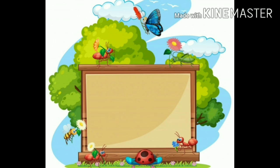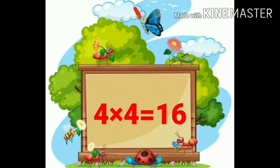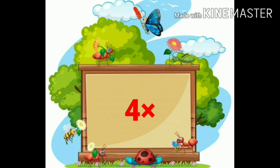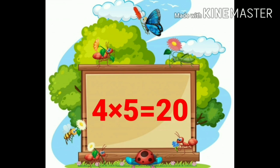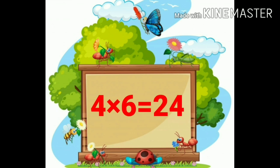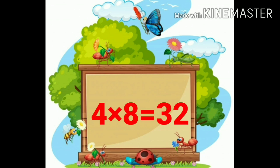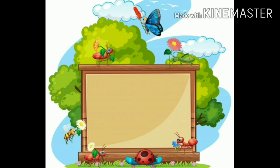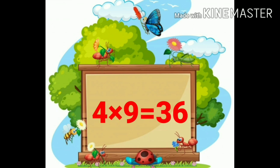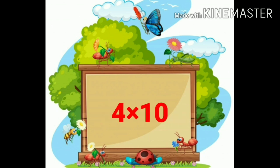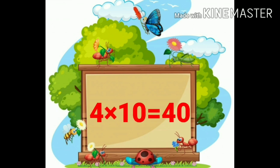Four ones are four. Four twos are eight. Four threes are twelve. Four fours are sixteen. Four fives are twenty. Four sixes are twenty-four. Four sevens are twenty-eight. Four eights are thirty-two. Four nines are thirty-six. Four tens are forty.